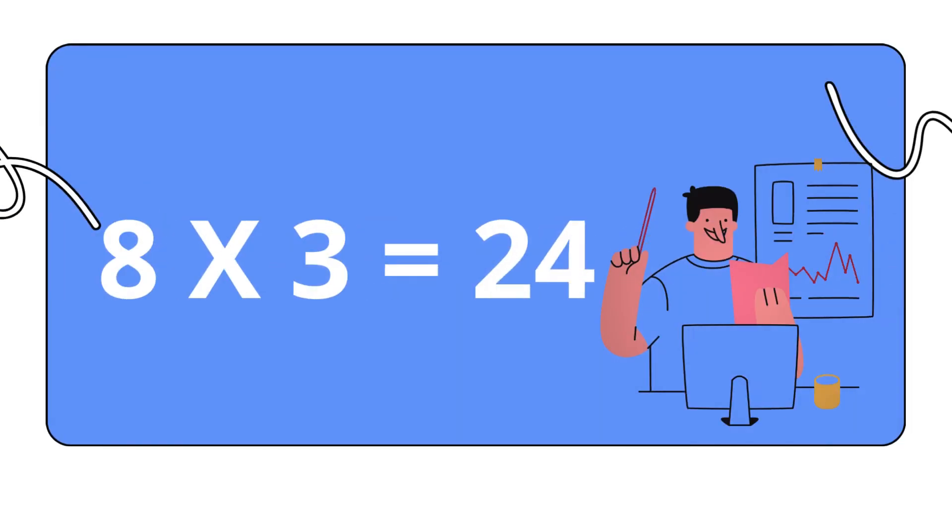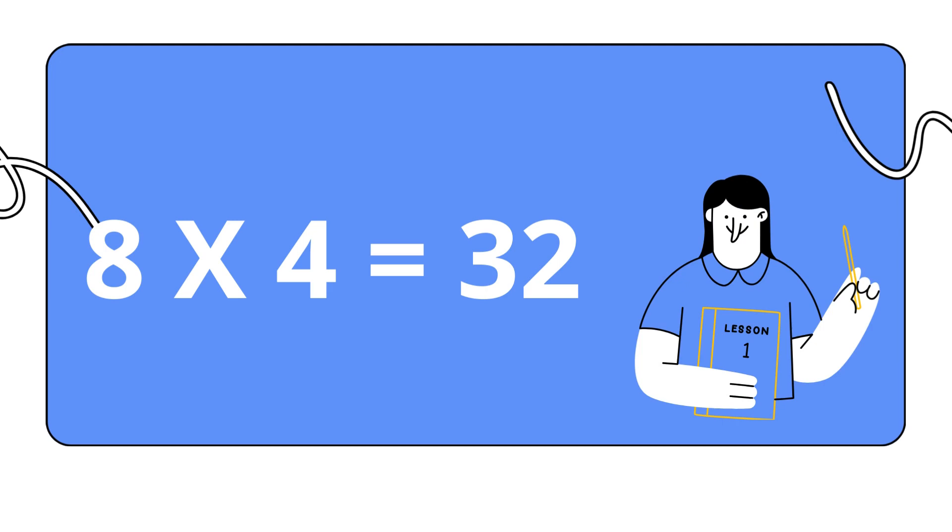Eight threes are twenty-four. Eight threes are twenty-four. Eight fours are thirty-two. Eight fours are thirty-two.